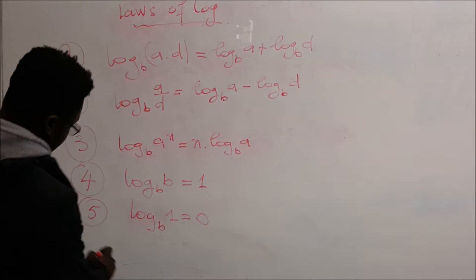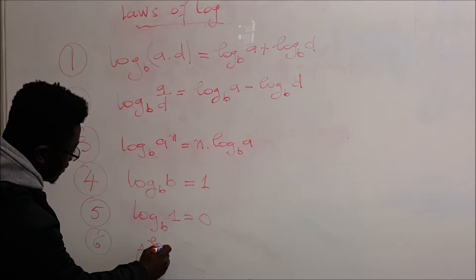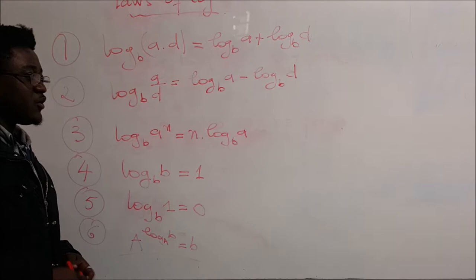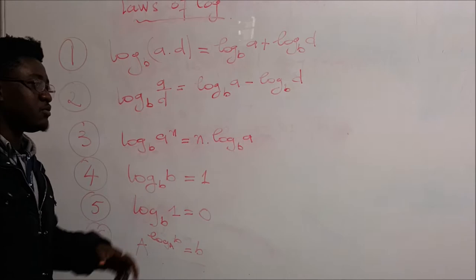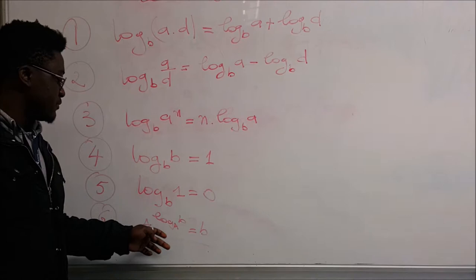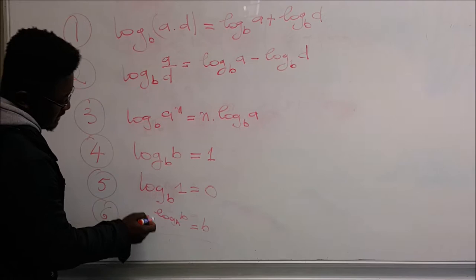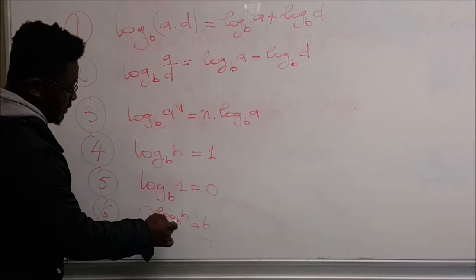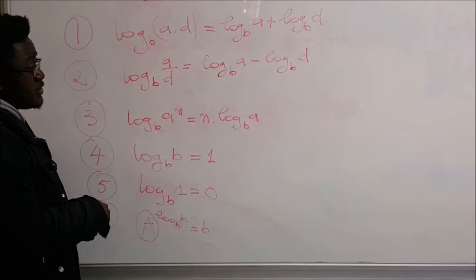On the sixth law: if we have A to the power of log base A of B, in this case it must equal B. The logarithm scientists discovered those formulas and demonstrated them. When you have A to the power log, if the base is A, because that number is actually raised to the power log base A of B, it will give B. That's what you must know.